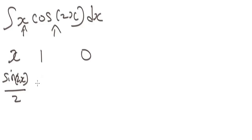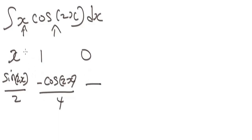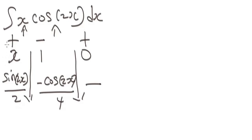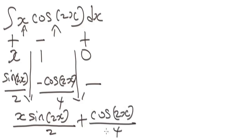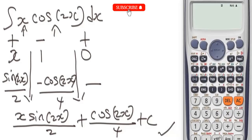Integrating sin(2x) gives minus cos(2x)/4. Now apply the alternating sign convention — plus, minus, plus. Multiplying diagonally: plus x·sin(2x)/2, then minus 1 times (minus cos(2x)/4), which gives plus cos(2x)/4. Since this is an indefinite integral, add the constant plus C, and this is the answer.